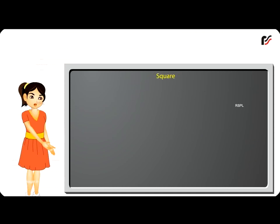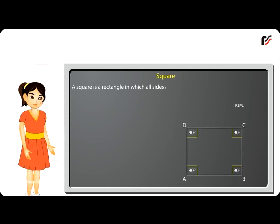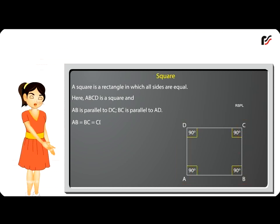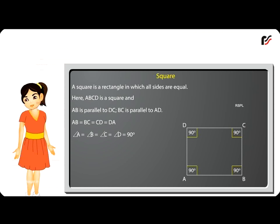Square: A square is a rectangle in which all sides are equal. Here, ABCD is a square where AB is parallel to DC, BC is parallel to AD, AB = BC = CD = DA, and angle A = angle B = angle C = angle D = 90 degrees.